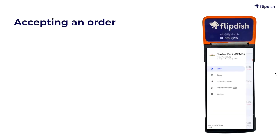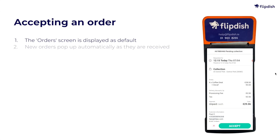Let's start with accepting an order. When you're looking at your FlipDish Terminal, the page you will see as default is the orders screen as selected from the sidebar menu. From here, you will be able to see all the orders that come into your store. When an order is made and sent to your store, you will see its details pop up regardless of what you have on the screen.